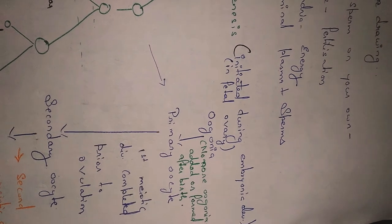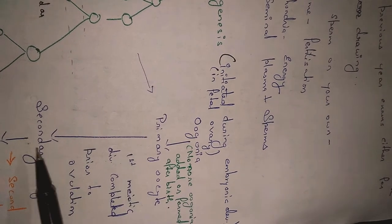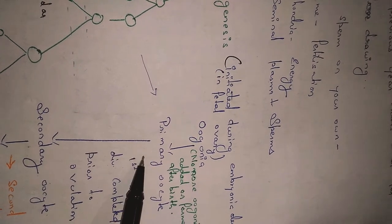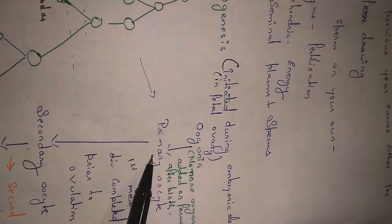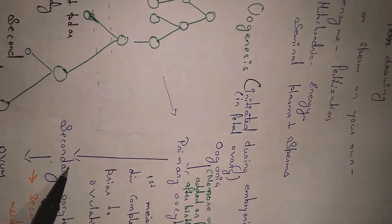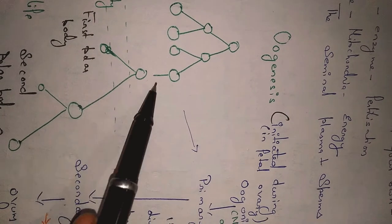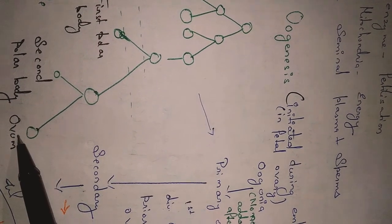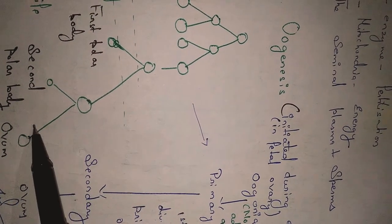The primary oocyte, which is arrested from birth to puberty, gets converted into the secondary oocyte by completion of meiosis one. When meiosis two begins, the secondary oocyte is released. We can see here the first polar body and the secondary oocyte. Meiosis two is then completed, producing the second polar body and the mature ovum. This completion occurs at the time of fertilization when the sperm fertilizes the ovum.